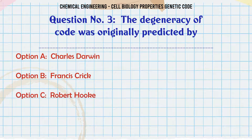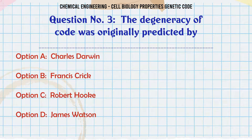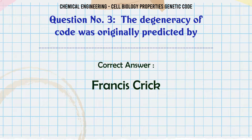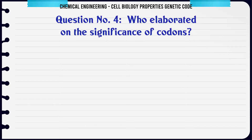The degeneracy of code was originally predicted by A) Charles Darwin, B) Francis Crick, C) Robert Hooke, D) James Watson. The correct answer is Francis Crick.